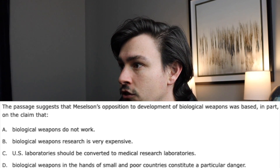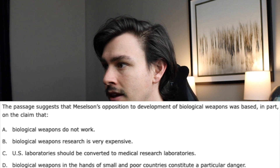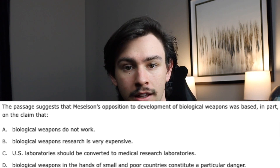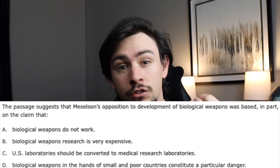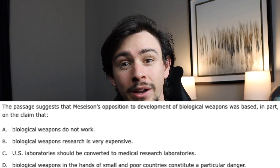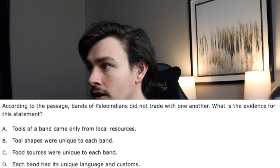In the first question it says: 'The passage suggests that Messelson's opposition to development of biological weapons was based in part on the claim that...' You can see that answer choice A says 'biological weapons do not work.' That's very harsh, it's strong, it leaves no wiggle room — answer choice A is incorrect. Even though in the passage the author says that he believes biological weapons are ineffective or not quite as effective as they could be, the author doesn't say that biological weapons do not work. The correct answer for this one is D.